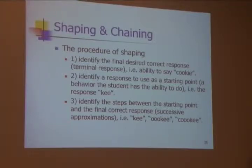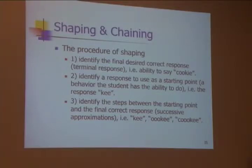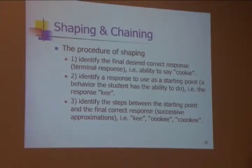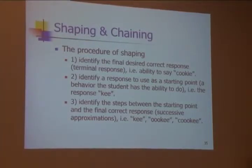So you identify a starting point. We know he says 'key,' and now we're going to require that he says that in order to get a cookie — before, he wasn't doing that. Once he does that reliably, we go on to the next step. So you might say he says 'key,' then he has to say 'uki,' then he has to say 'cookie.' Something like that. It's the successive approximations that you're identifying and reinforcing.